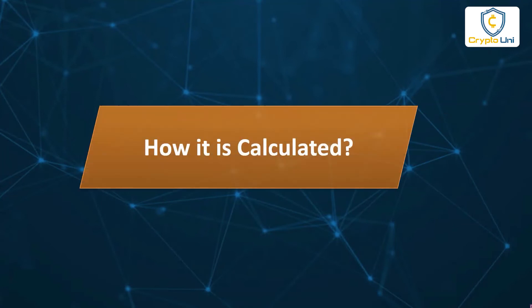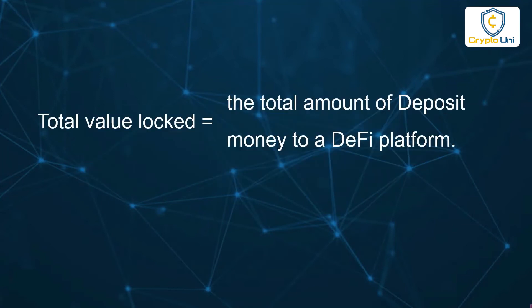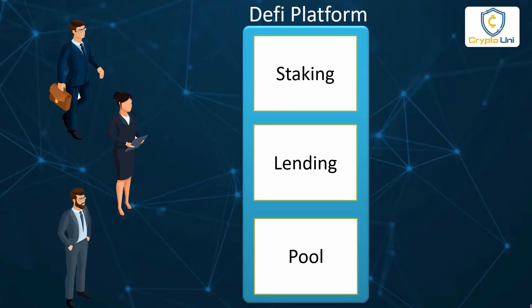How is it calculated? Total value locked is equal to the total amount of deposit money to a DeFi platform. For example, Michael deposits $1,000 worth of crypto into a money pool as staking to validate transactions on its native blockchain and receive rewards. Susan lends $1,000 in crypto for interest on that platform.